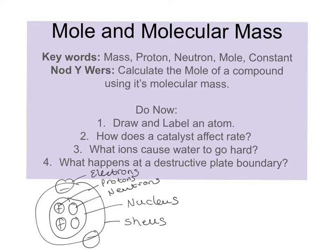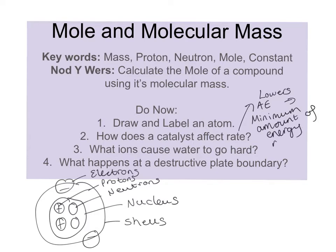We say that an atom is overall neutral because it's got the same number of electrons and protons. How does a catalyst affect rate? A catalyst lowers activation energy. Activation energy is the minimum amount of energy required for a reaction to take place. If you're lowering that activation energy, more particles will possess it, so more particles will have the minimum amount of energy required for reaction to take place.